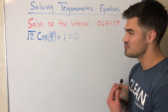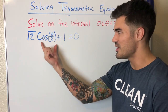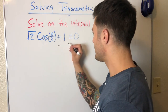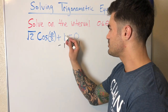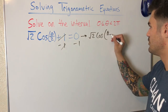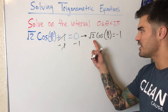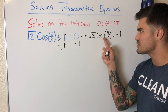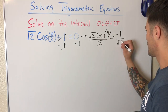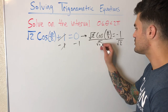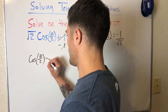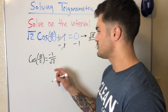We have an equation, and my strategy is to isolate the trig piece — specifically I want to get cosine(θ/2) equals something. I can do that using algebra: get rid of the plus 1 by subtracting 1 from both sides. Then we have √2 · cos(θ/2) = −1. Now I divide both sides by √2, leaving cosine(θ/2) equals −1/√2.